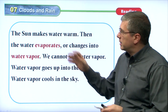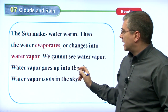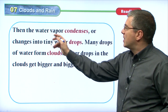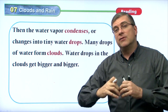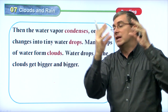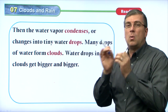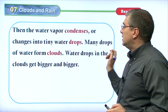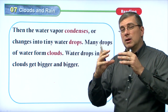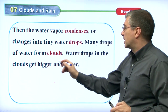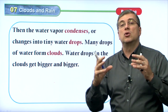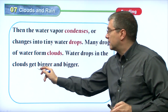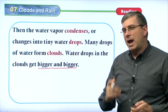Water vapor goes up into the air and cools in the sky — that's the second step. Because it cools down, the water vapor condenses — it comes back together and changes into tiny water drops. You can see tiny water drops, but before that you can't really see the water in the air. Many drops of water form clouds. Water drops in the clouds get bigger and bigger, especially as it gets cooler and cooler, because they continue to condense and come together.